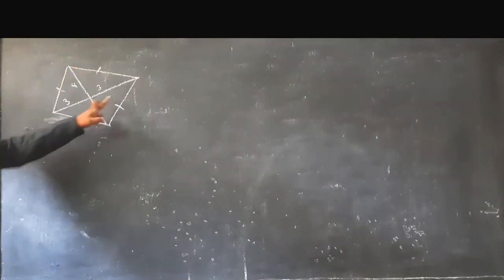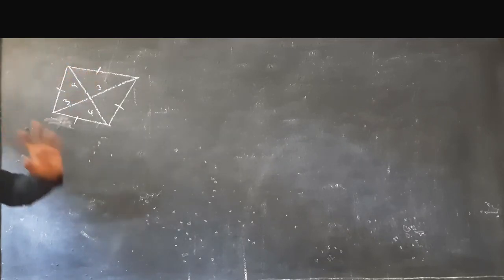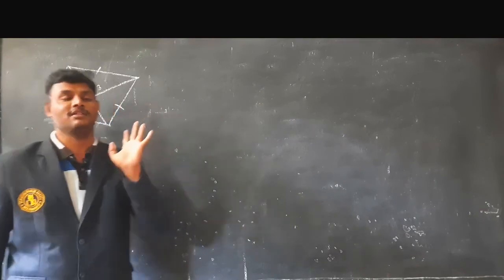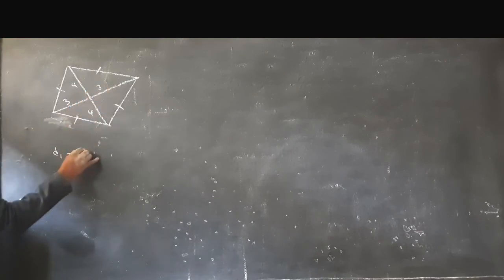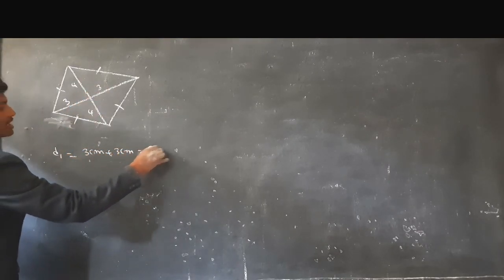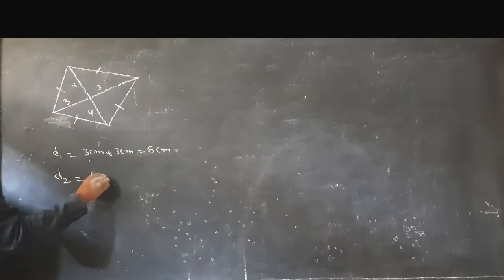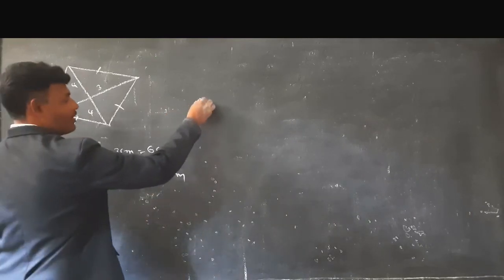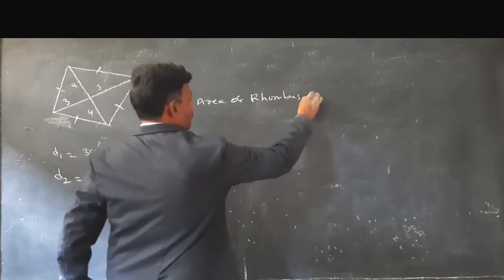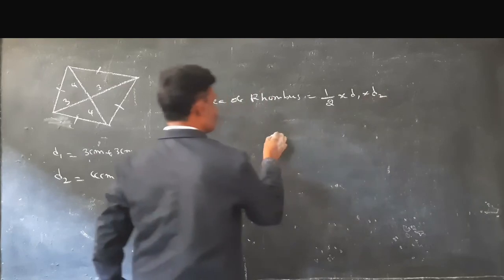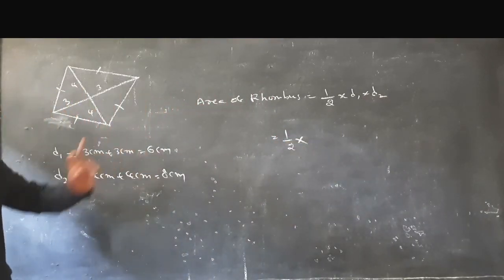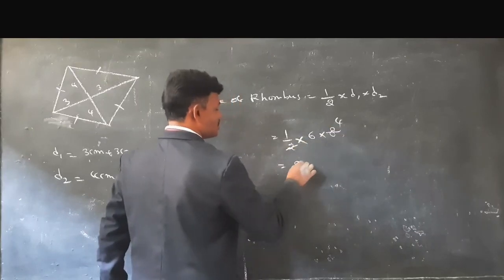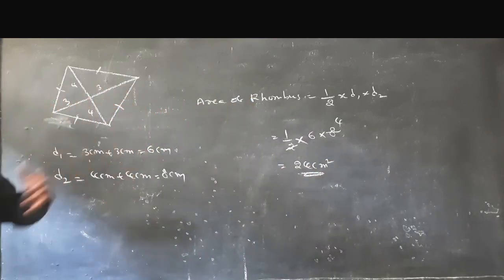In the given figure, all sides are equal and there are two diagonals — this is a rhombus. In a rhombus all sides are equal but angles are not 90 degrees. Here d1, the first diagonal, is 3 cm plus 3 cm equal to 6 cm. Similarly d2, the second diagonal, is 4 cm plus 4 cm equal to 8 cm. Area of rhombus is half into d1 into d2, which is half into 6 into 8, equal to 24 cm square.